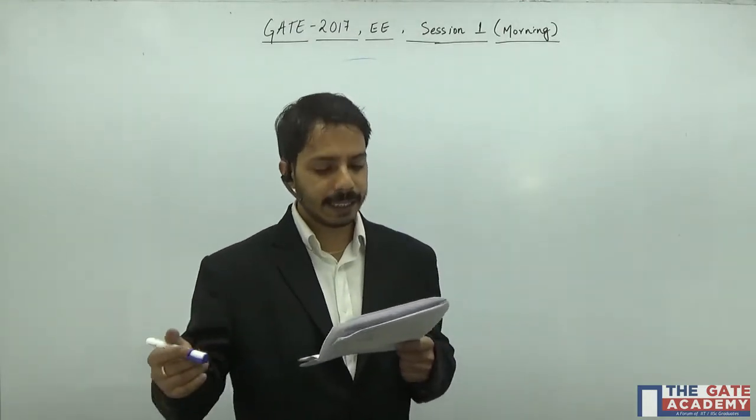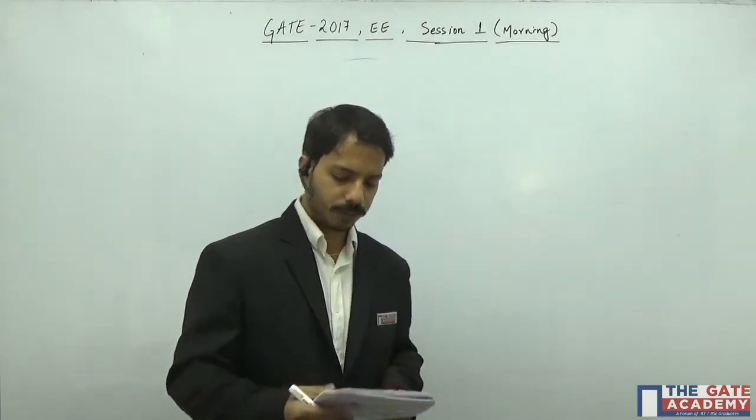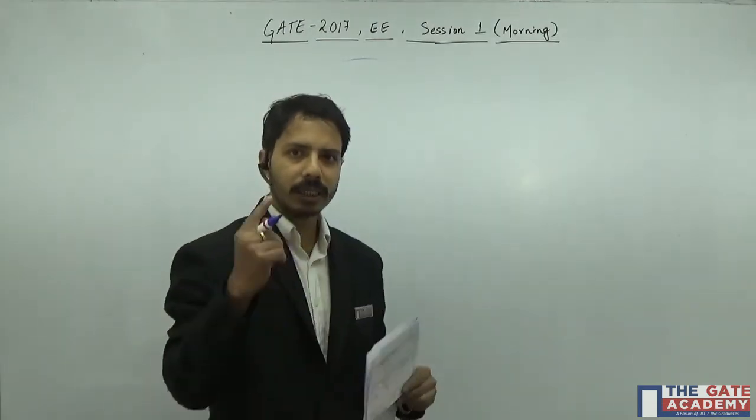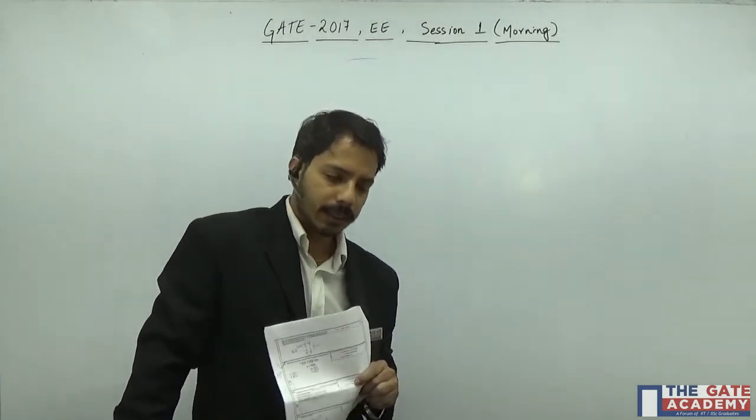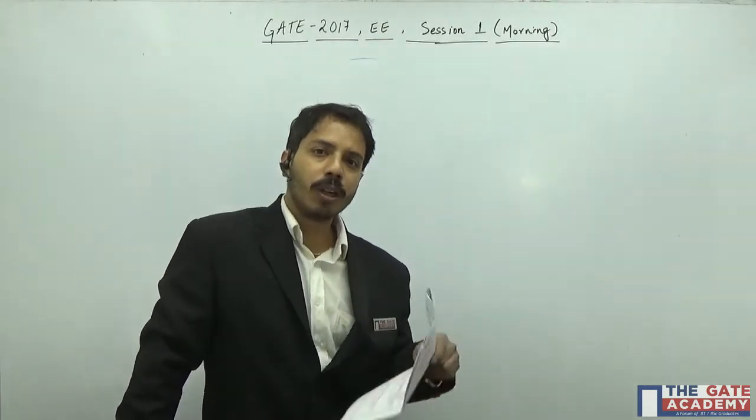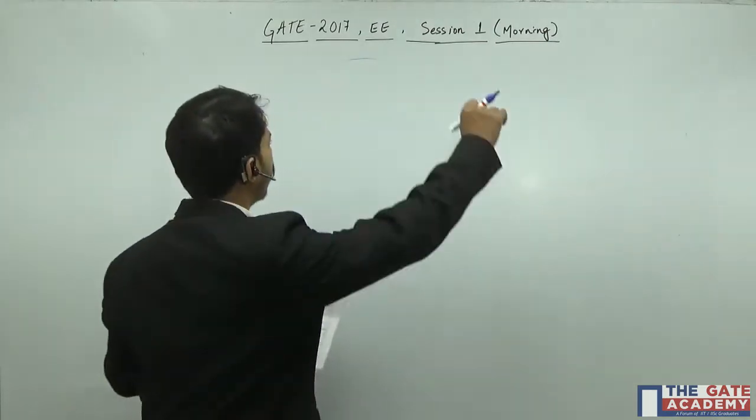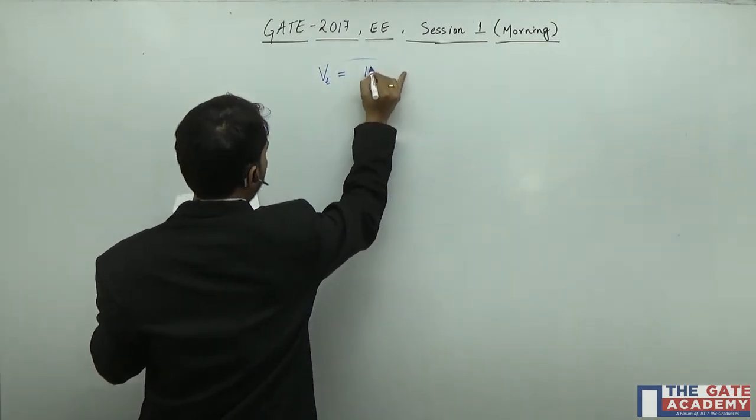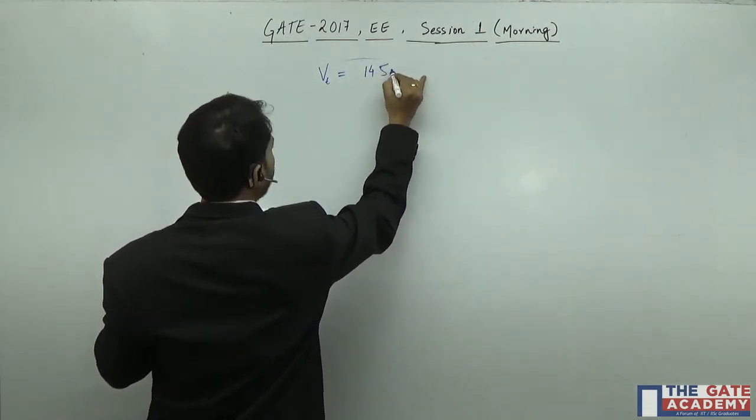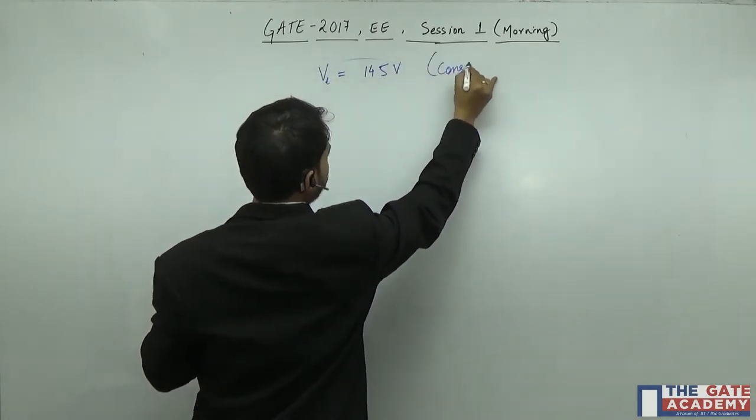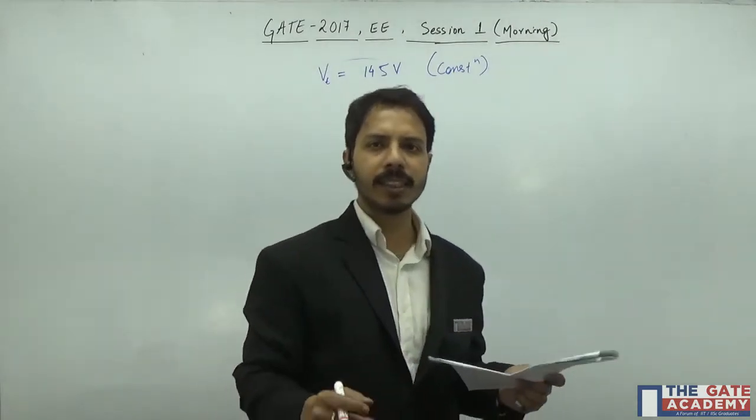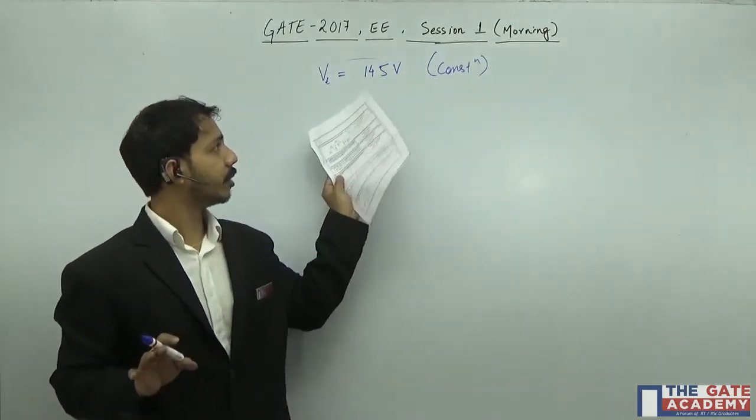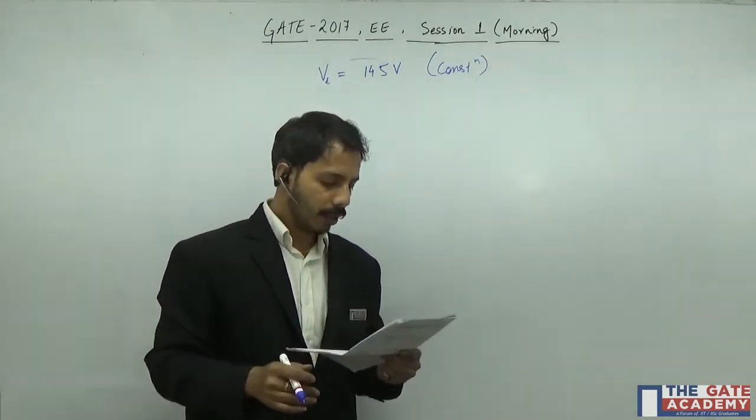In this question, there is a DC grid. One thing to remember: since it's mentioned as a DC grid, the voltage of the DC grid will always remain constant. So the grid voltage VT is 145 volts and this is constant. That means even if there is a change in the speed of the generator, the output voltage will not change. This is very important.